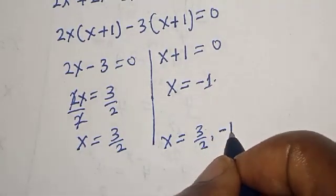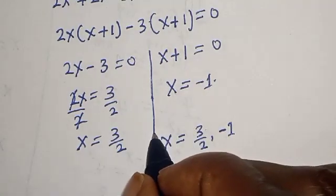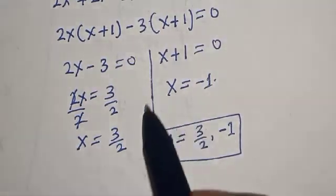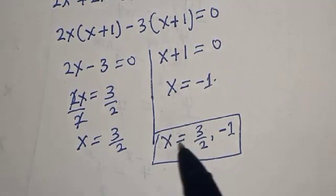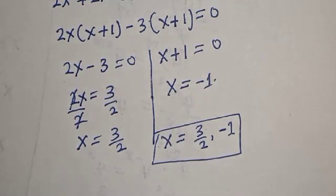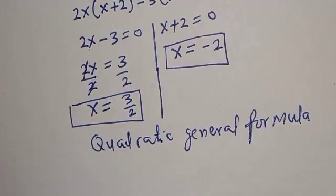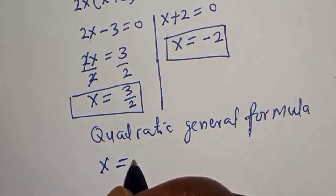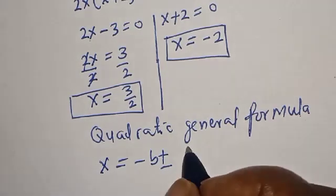Therefore our final answers are s equals 3 over 2 and s equals minus 1. We may also solve this equation using the quadratic general formula to confirm our answer.